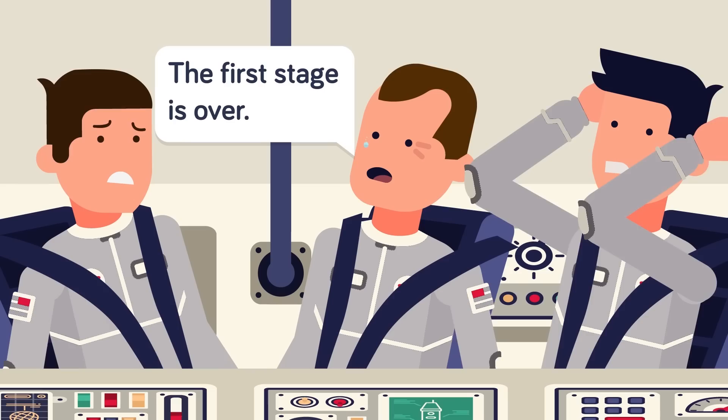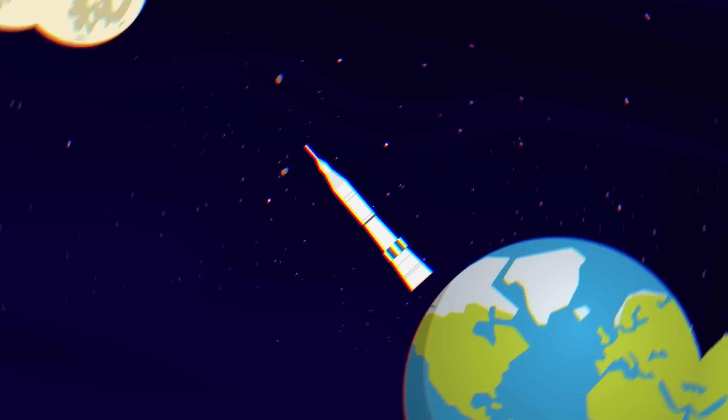Almost three minutes later the crew hears the explosive bolts fire off as the first stage is successfully cast off, and a moment later they are kicked back into their seats as the five engines of the second stage fire off. Carrying a much smaller payload, the engines quickly accelerate the spacecraft, pinning the astronauts to their seat.